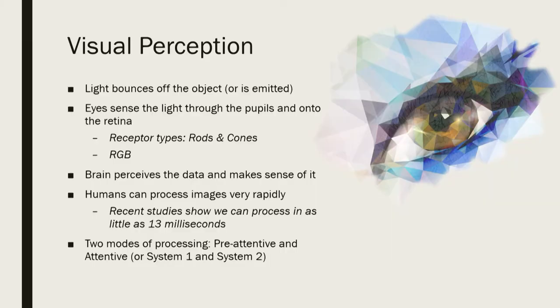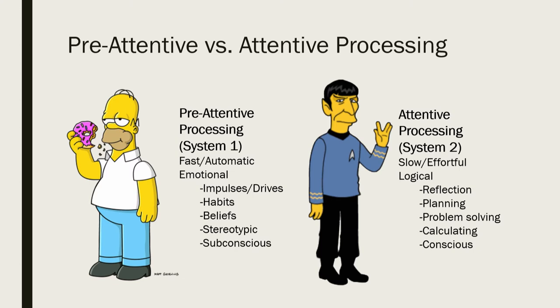There are two modes of processing: pre-attentive, or system one, and attentive processing, or system two. Pre-attentive is very quick — it happens without us having to consciously think about it. Automatic. These are the attributes that stick out to you unconsciously, and it's very efficient — much of this processing is done in parallel. You are kind of driven by these objects that pop out to you. It can be a little irrational and impulsive at times, balancing itself on stereotypes and preconceived notions, because it's trying to be efficient, making sense of all that sensory information coming at you.